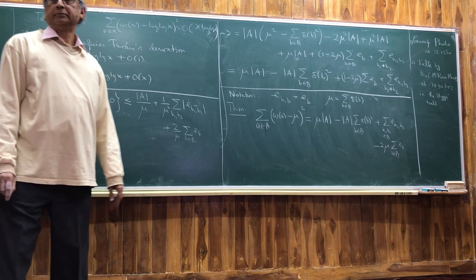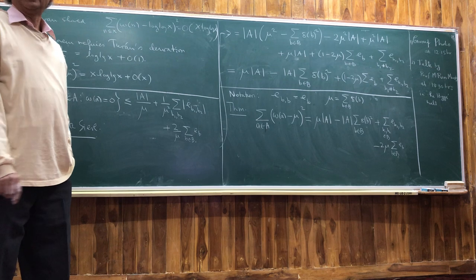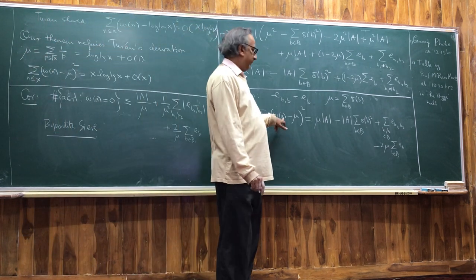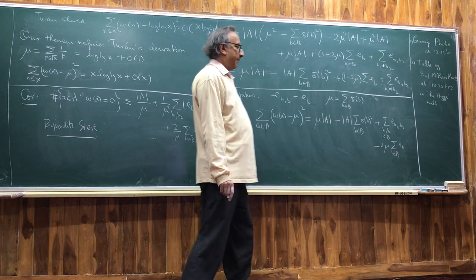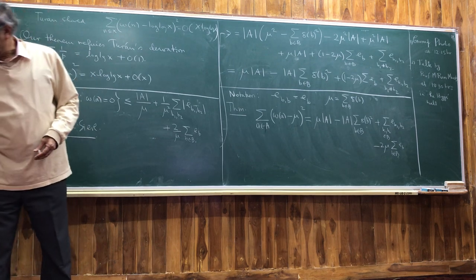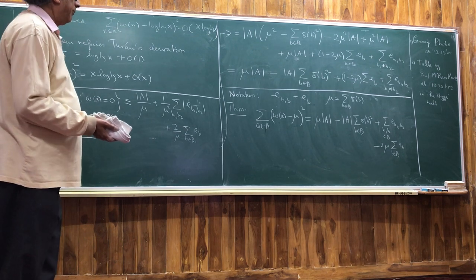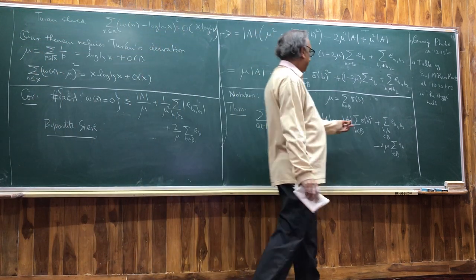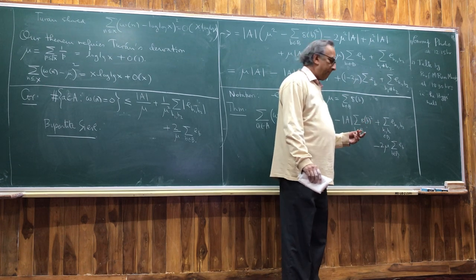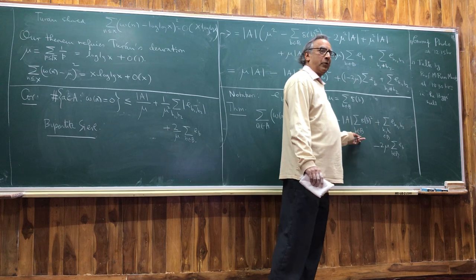So, therefore, provided those error terms are really small, you get that the number of elements unrelated to anything in B is at most |A| / mu, plus error terms — one term of order (1/mu) * sum |E_{b1,b2}| and another of order (2/mu) * sum |E_b|. This wins by mu over the trivial estimate of |A|. This is the bipartite sieve.